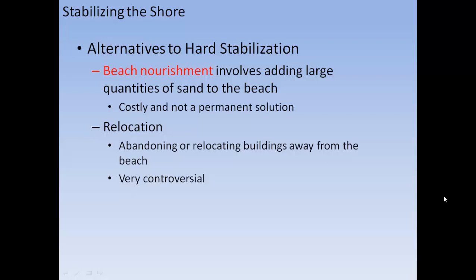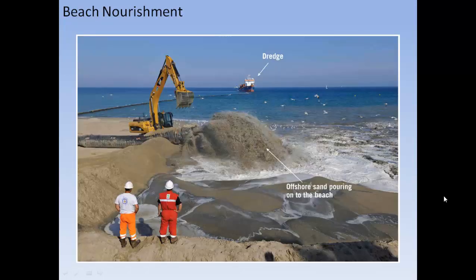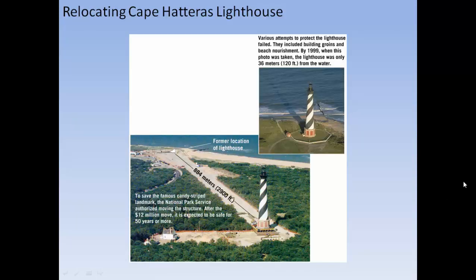Alternatives to hard stabilization include beach nourishment — adding large quantities of sand to the beach — which is costly and not a permanent solution. Relocation involves abandoning or moving buildings away from the beach, which can be controversial. Here a dredge pumps sand back onto the beach for nourishment. The Cape Hatteras Lighthouse was relocated because it was getting too close to the eroding edge, at considerable expense.